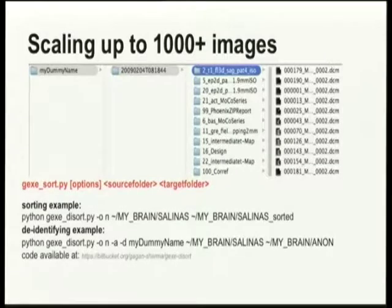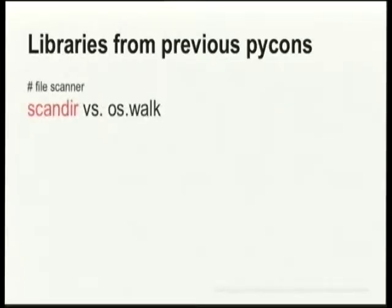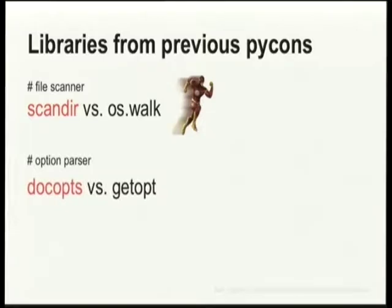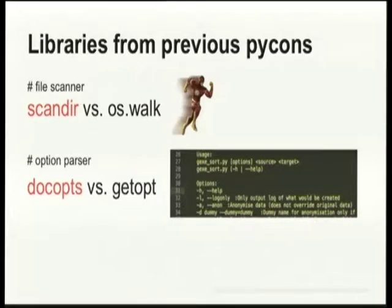Here's an example of how we run the code for sorting and de-identifying. The code is available on Bitbucket. One thing worth mentioning is that we were able to improve it after coming to PyCon last year and hearing about a couple of libraries. We used Scandir to go through all files more efficiently and improve reading speed — we tried this instead of os.walk and initially it wasn't working, but Gagan contacted the developer and once we figured that out, the code became very fast with this new library. We also tried Docopt to simplify parsing arguments into the script — you don't have to write the usage function because it gets written automatically as you specify the input arguments. We're also looking at pandas for handling data structures.